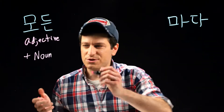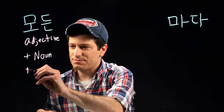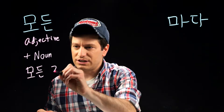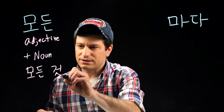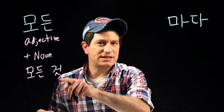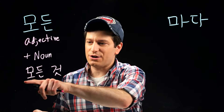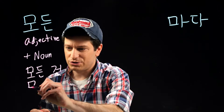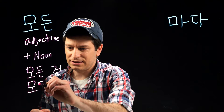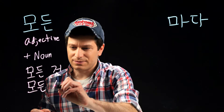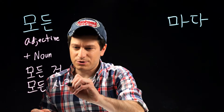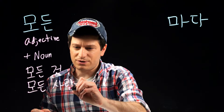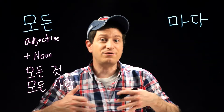Let me give you a couple of examples. You could say something like 모든 것. 것 means 'thing', so now you have 'everything'. Or you could do 모든 사람. 사람 means 'a person', so 'every person' — everyone.